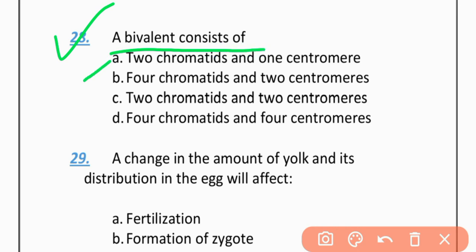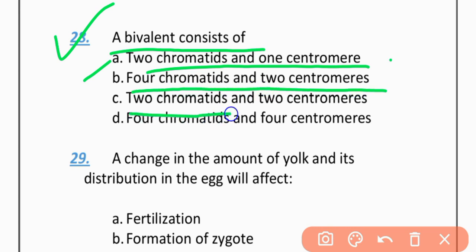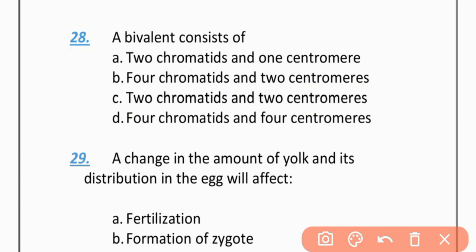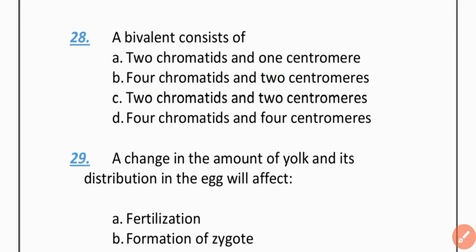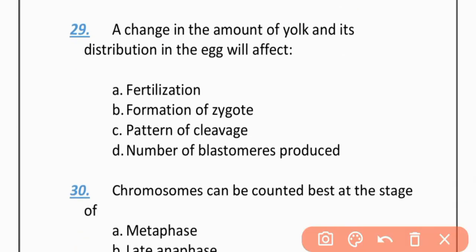MCQ 28: A bivalent consists of — Option A: Two chromatids and one centromere. Option B: Four chromatids and two centromeres. Option C: Two chromatids and two centromeres. Option D: Four chromatids and four centromeres. The correct option is B — four chromatids and two centromeres.